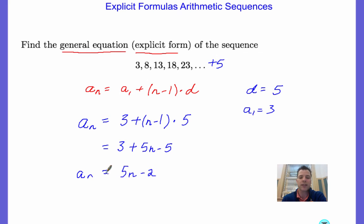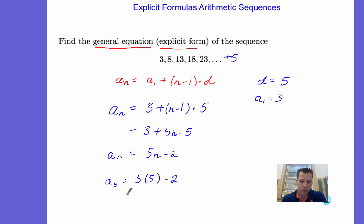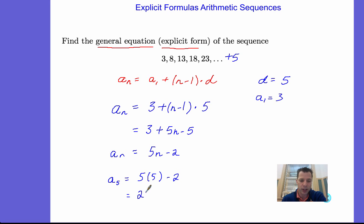Now, we can check this. Let's look, 1, 2, 3, 4, 5, let's find the fifth term. So, we could say, a sub 5 is equal to 5 times 5 minus 2. That equals 23, so it looks like our formula checks out.